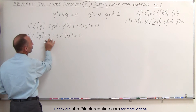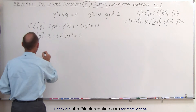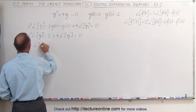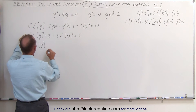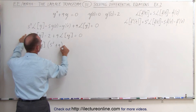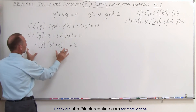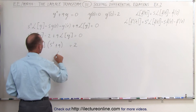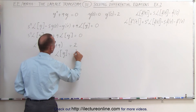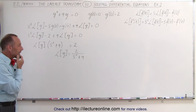So now we can move the minus 2 to the other side, and on the left side we can factor out the Laplace transform of the function. So we have the Laplace transform of the function times s squared plus 9, and that equals — when we bring the minus 2 to the other side — we get plus 2. Now we divide both sides by s squared plus 9, so now we can see that the Laplace transform of y is equal to 2 divided by s squared plus 9.